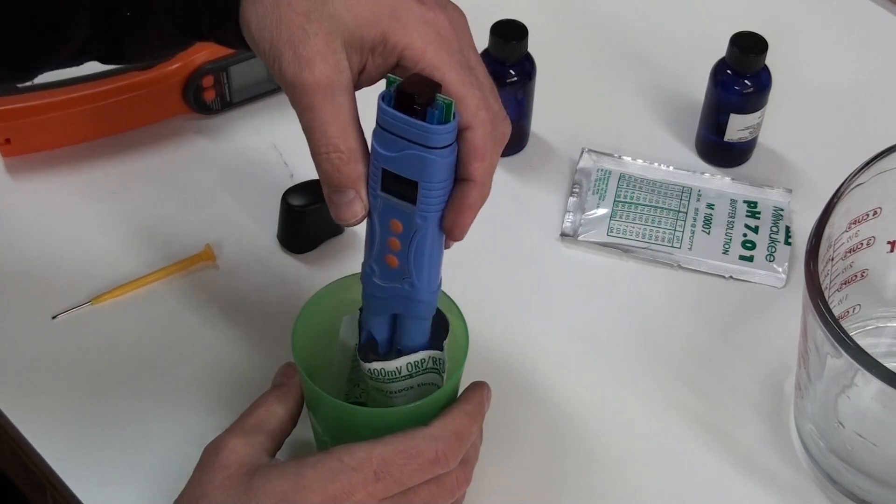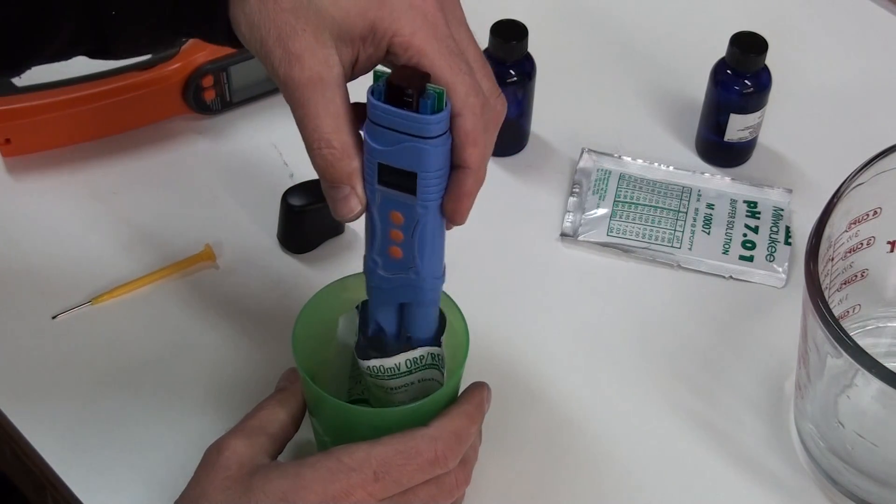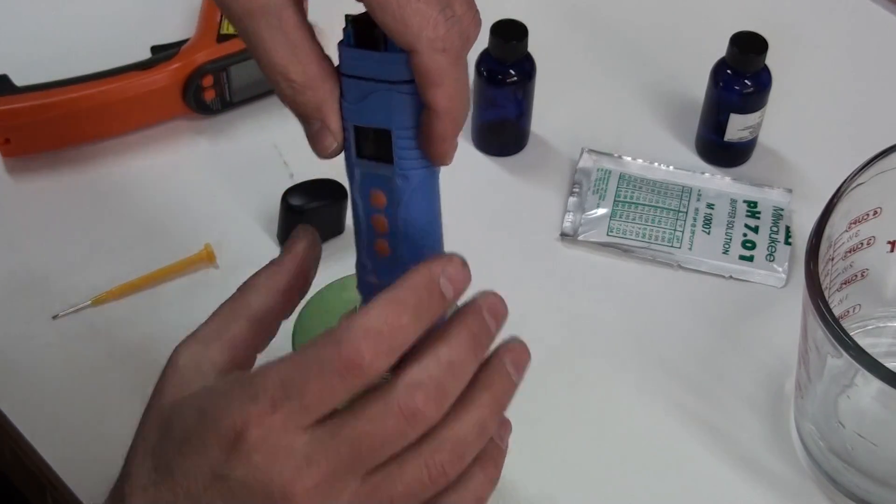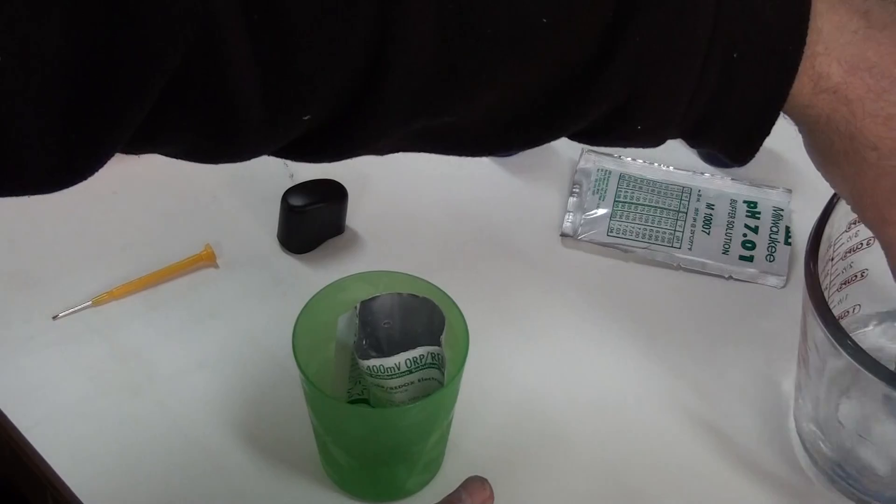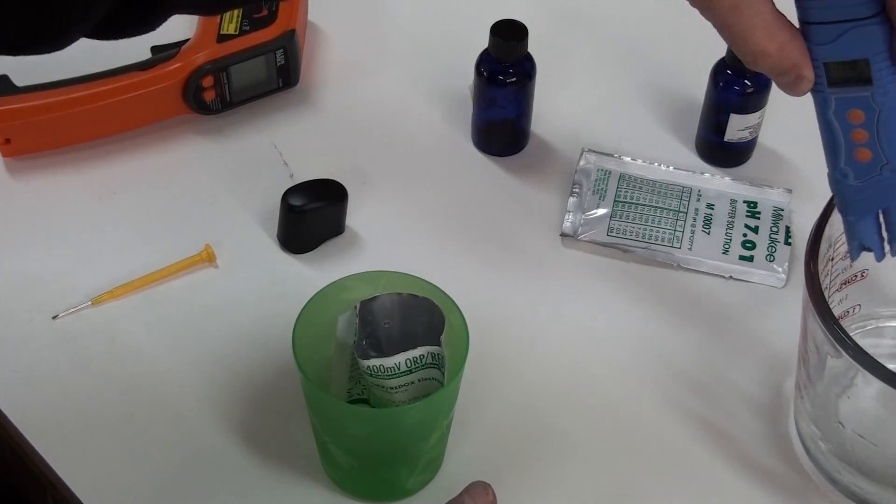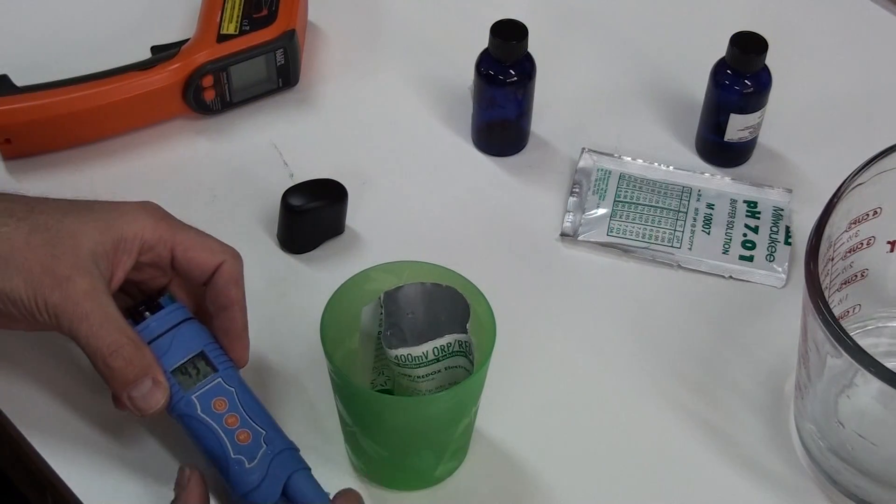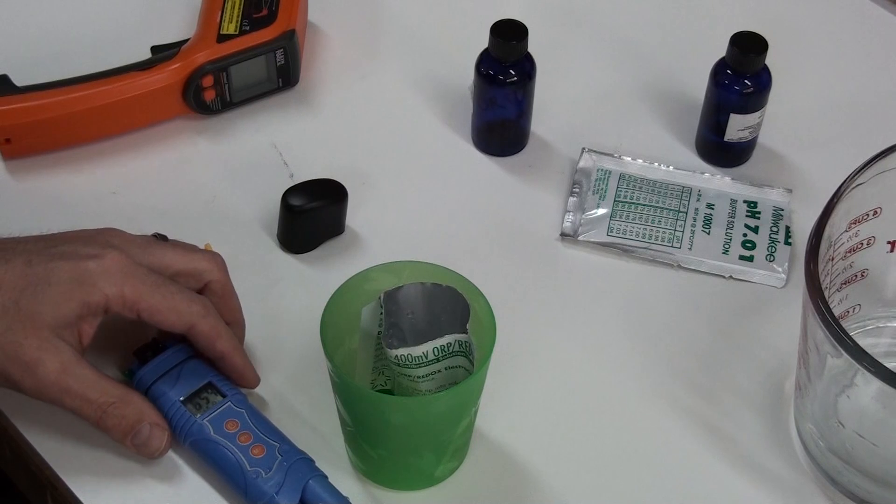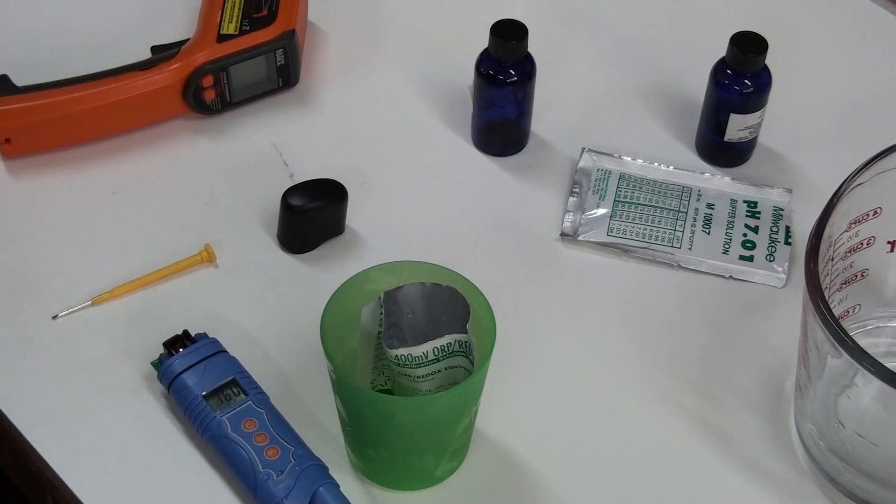Now when I use my meter to test the ORP value or pH, I'll have an accurate meter. Hope this helped everyone. If you have any questions or comments, please leave them below. I'll be sure to try and answer all of them. This is Steve. Thanks for watching.